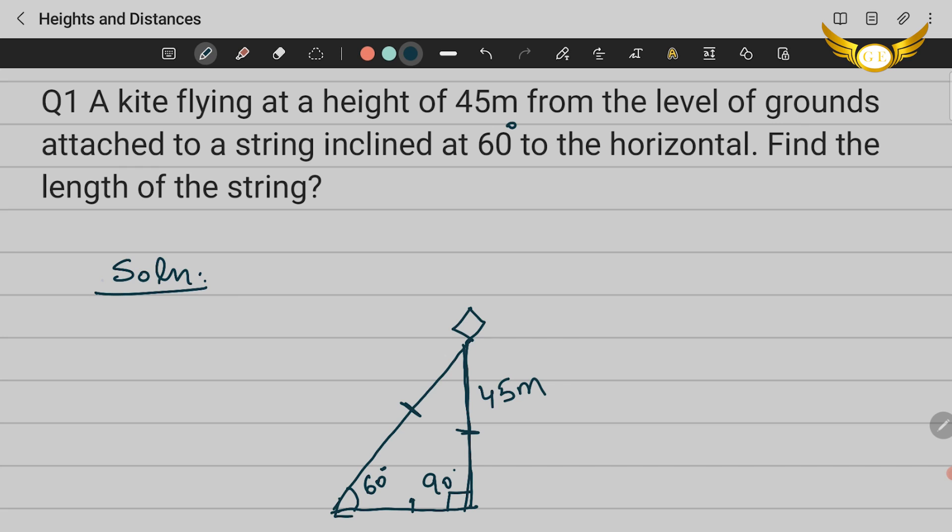We know that this angle is 90 degrees because it's a right angle triangle. Also, sum of the angles of the triangle is equal to 180 degrees. We need to find this angle. So 90 + 60 + x = 180°, where x = 180 - 150, so x = 30 degrees. This angle is 30 degrees.